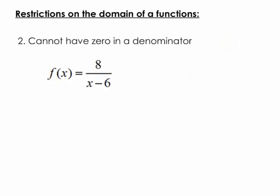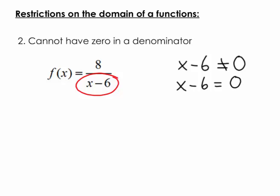What about a rational function — a fraction? In a fraction, the restriction is on the denominator: the denominator cannot equal 0. To find the restriction, force the denominator to equal 0 and solve for x. We can often just see these restrictions — x would equal 6 to make it 0, which means our restriction is x cannot equal 6. That's our restriction on that domain.